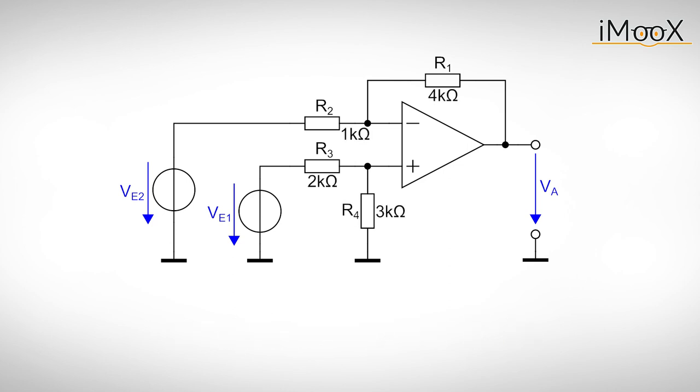For example, let's assume R1 is 4k, R2 is 1k, R3 is 2k and R4 is 3k. The output voltage would be 3Ve1 minus 4Ve2.